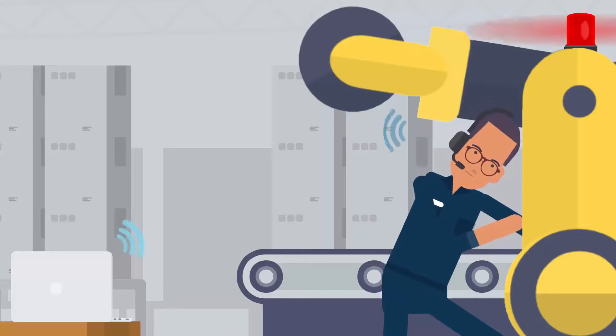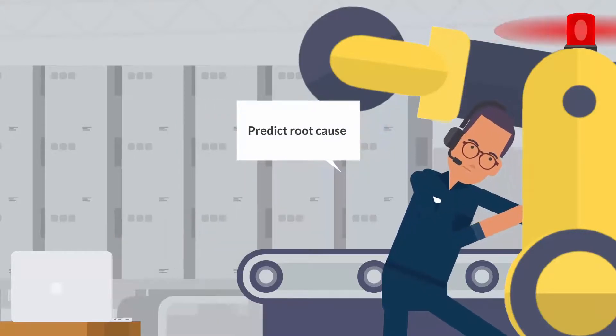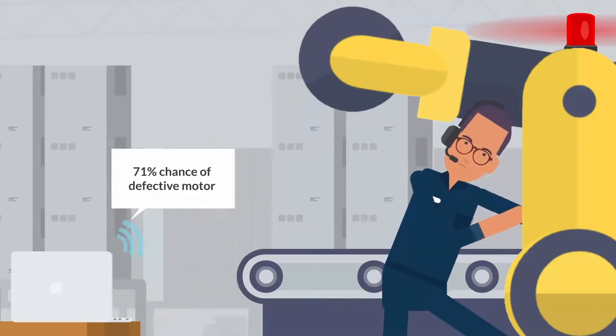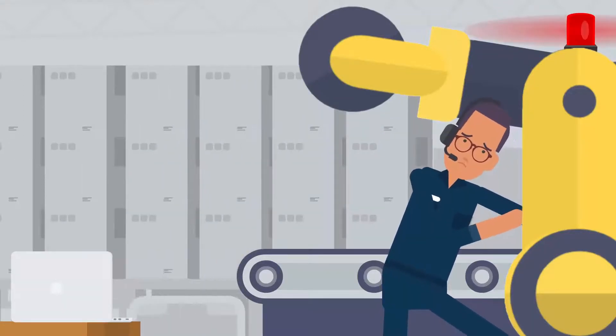Peter asks the Digital Assistant the most likely root cause of the problem based on current information, and it predicts it's a defective motor. That's bad news, because replacing a defective motor is difficult and expensive.